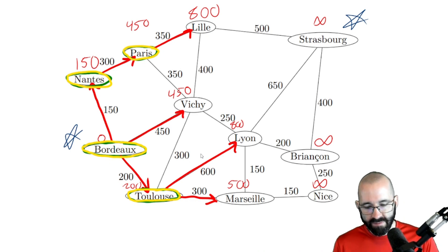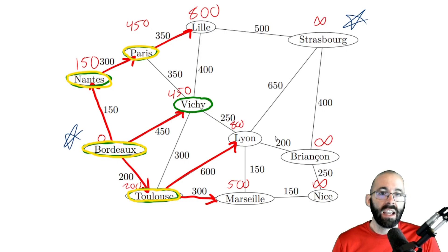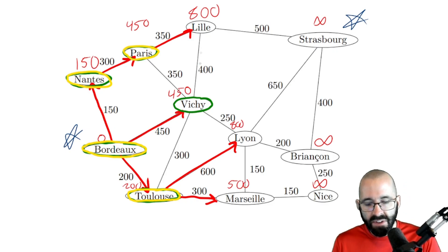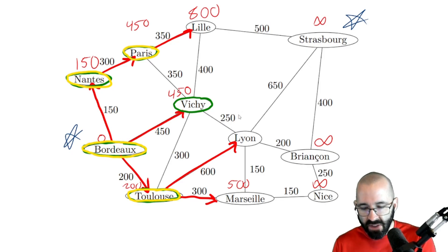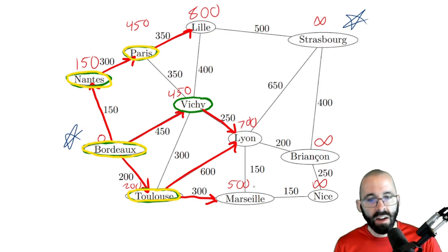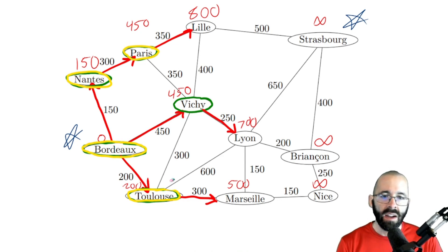Now Vichy has the smallest d sub i at 450. We look at every unvisited neighboring node — not Paris or Toulouse, those are already visited. For Lille: 450 plus 400 equals 850, which is bigger than 800, so we don't care. For Lyon: 450 plus 250 equals 700 — we do care about that. We update Lyon from 800 to 700, draw a new arrow from Vichy to Lyon, and erase the old arrow from Toulouse. Vichy is now marked as visited.